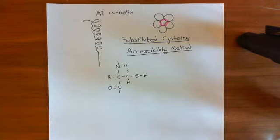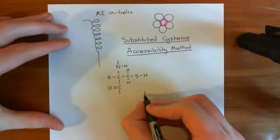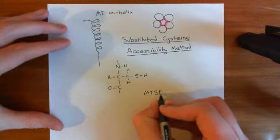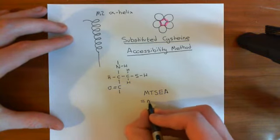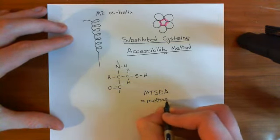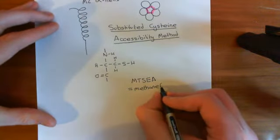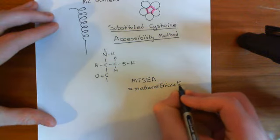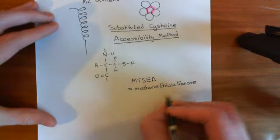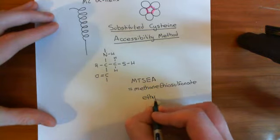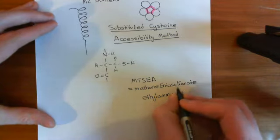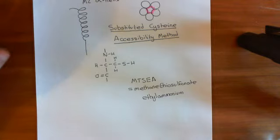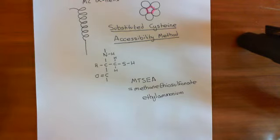The drug we use to bind to our cysteine amino acid residues is known as MTSEA, which stands for methanethiosulfonate ethylammonium. Methane is the M, TS is thiosulfonate — and I'll talk you through this name — and then ethylammonium. Sulfonate is a group in chemistry that people generally haven't studied unless they've done a degree in chemistry, so let me explain what the sulfonate group is.